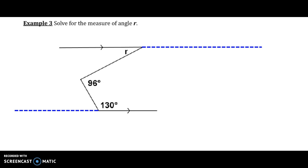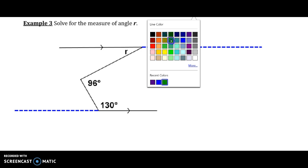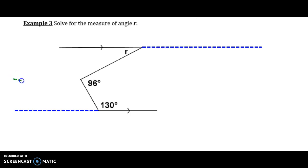There are a variety of ways that you could tackle this. The way I'm going to tackle it is to use Euclid's Parallel Postulate. So I'm going to draw an auxiliary line through that point, which is the vertex of the 96-degree angle, and that line will be parallel to the given lines. That is what Euclid's Parallel Postulate says.